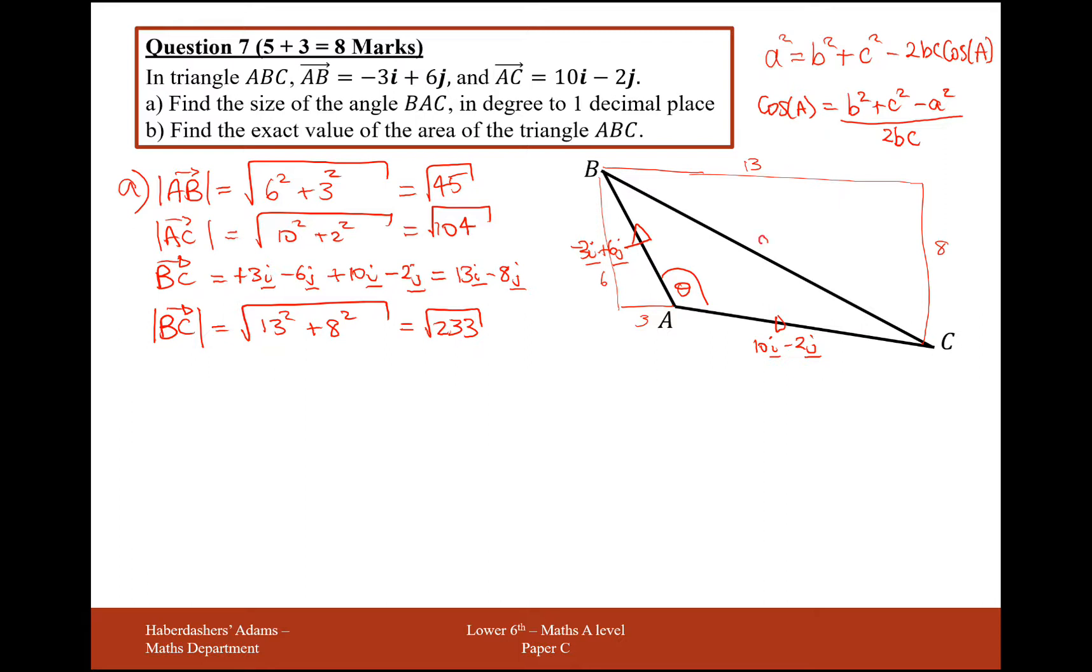So we have to label this side as A on the diagram, this side is B and this side is C. So cos of the angle BAC is going to equal B squared, so that's this side squared, that was AC, so that's going to be 104 square rooted squared, so that would just be 104. Add on the side C squared, that would be AB, take away A squared, so that would be take away 233.